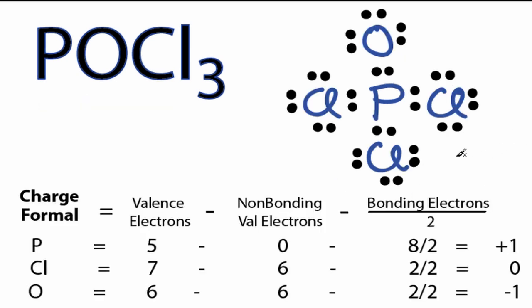Looking at the formal charges for phosphorus on the periodic table, it has 5 valence electrons. Up here, we have every pair involved in bonds. That's going to be 0. We have 2, 4, 6, 8 bonding valence electrons, which we'll divide by 2, which gives us a formal charge of plus 1 for the phosphorus. When we calculate the chlorine, we find that that is 0, and the oxygen has a minus 1 formal charge.